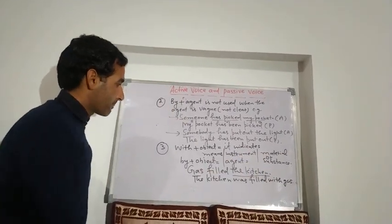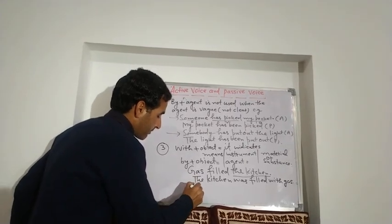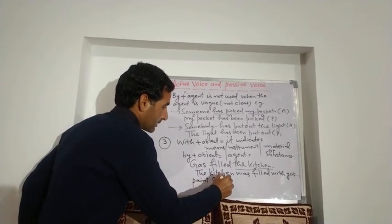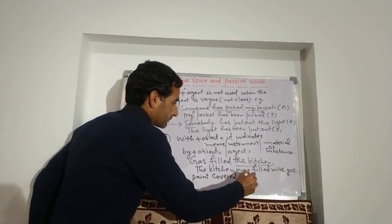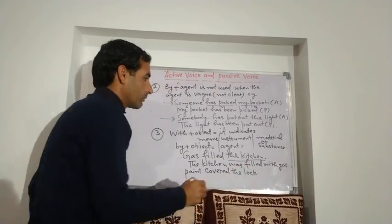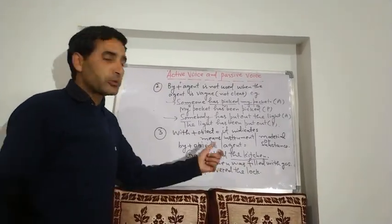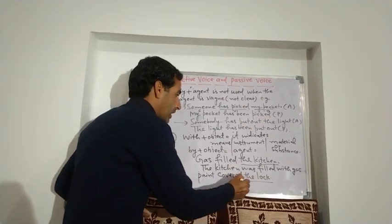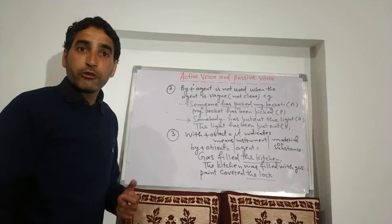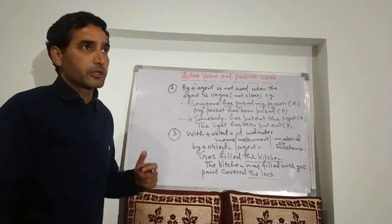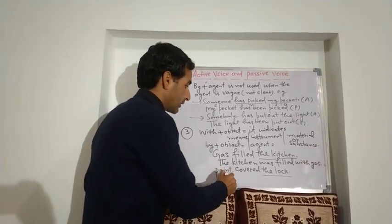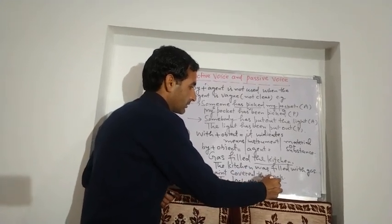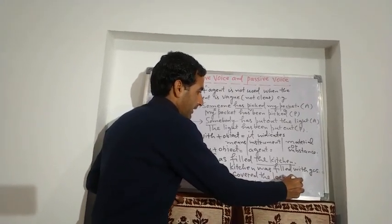Another example: 'Paint covered the lock.' When we want to change this active sentence into passive voice, I should write 'The lock was covered with paint.' 'By paint' is not possible here, so I write 'The lock was covered with paint.'